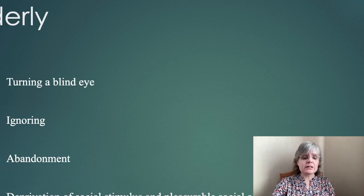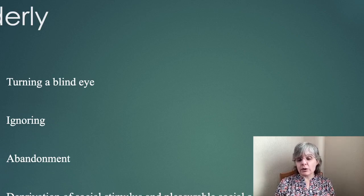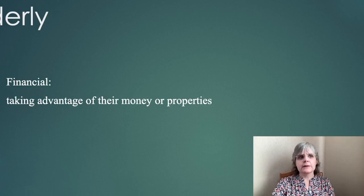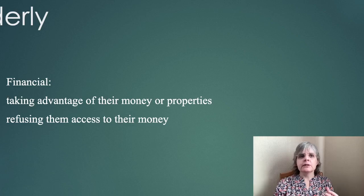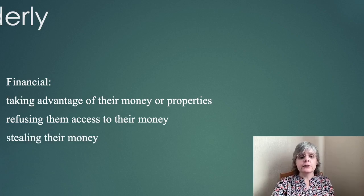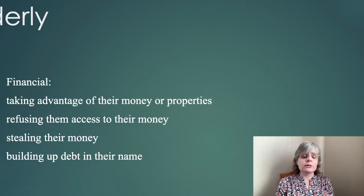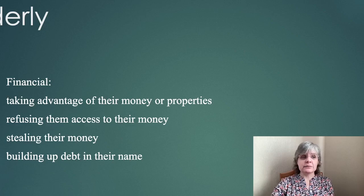Isolation from other people — relatives — people are not allowed to come and visit, and maybe if they're physically impaired they can't go and visit themselves. Financial abuse: this happens a lot. They take advantage of their money or properties, refuse access to their money, so the person becomes dependent because they need to pay bills and buy food. They could steal money, build up debt in their name. With technology, older people can be so dependent on younger people, and perhaps without them knowing, the person is taking advantage of their money and spending it.